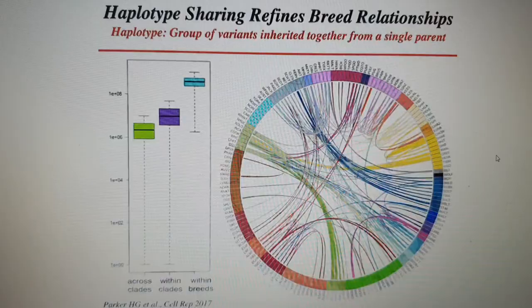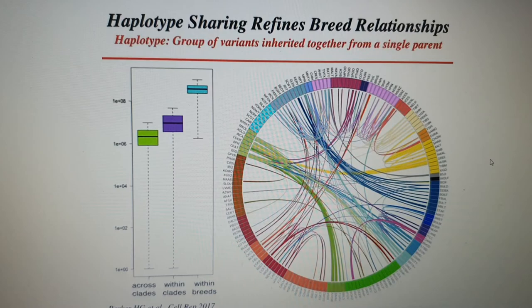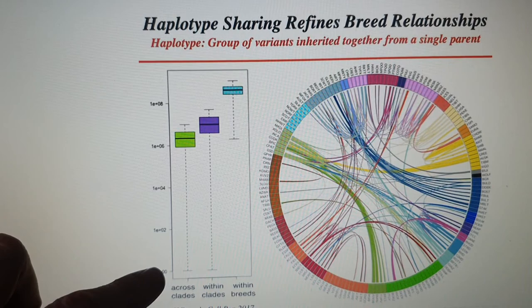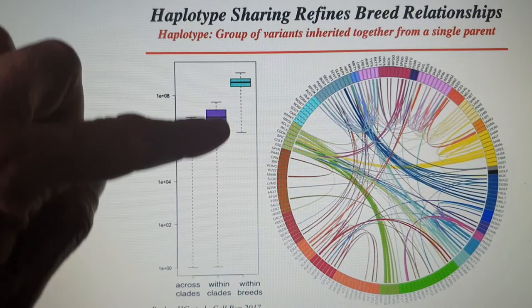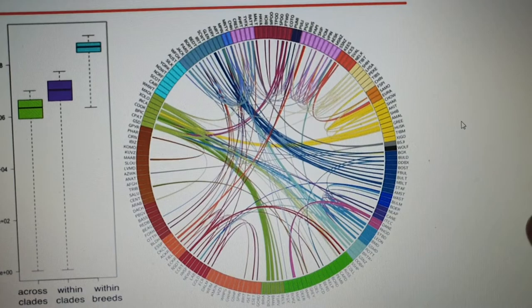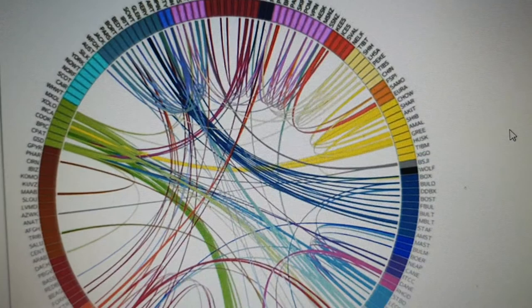This slide shows haplotype sharing. It tells you the haplotype sharing across clades, within clades, and within breeds. Within breeds there is of course the least sharing, but within clades you can still have big diversity of haplotypes. You can also see the exchange between all those breed groups.